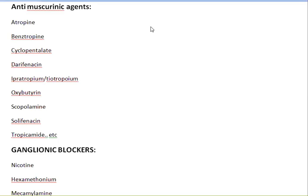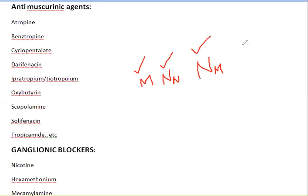We have two receptors: the muscarinic receptor and the nicotinic receptor. The nicotinic receptor is present at the level of the ganglion (NN), and another nicotinic receptor is present on the neuromuscular junction (NM). We write the receptor initials as M, N-N, and N-M. The NM receptor is found only in skeletal muscles, and muscarinic receptors are always at the post-synaptic end.